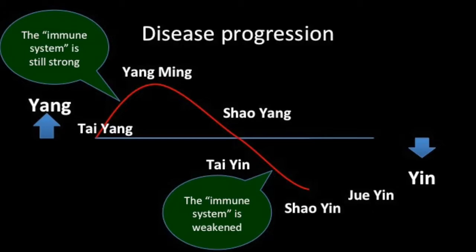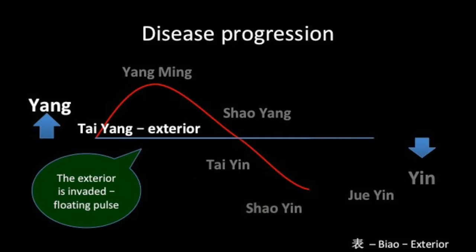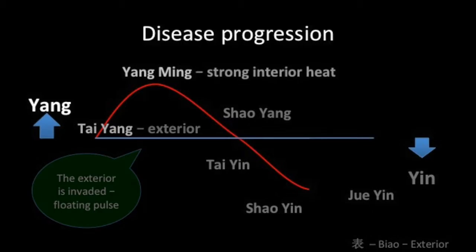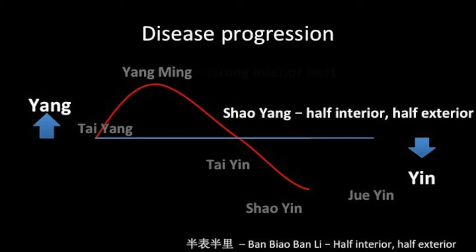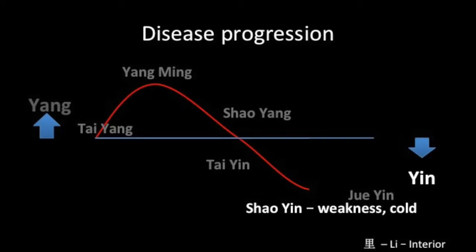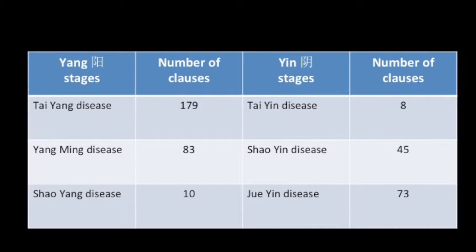The different stages can generally be categorized as follows. At the Taiyang stage, the exterior of the body is being invaded and the body is readying its defenses, indicated by a floating pulse. At the Yangming stage, there is strong interior heat, indicating the body is vigorously reacting to the invading pathogens. The Shaoyang stage is regarded as a pivot between yang and yin, with the disease described as being half interior and half exterior. The Shaoyin stage is characterized by weakness and cold. A very large portion of the text is dedicated to Taiyang disease, providing material to understand the general principles of Shang Han Lun methodology.